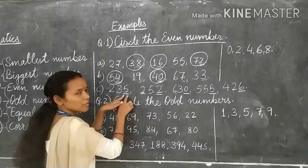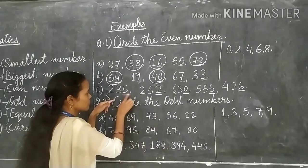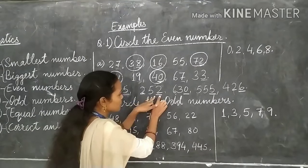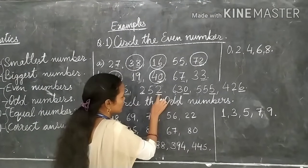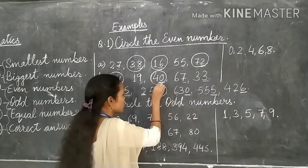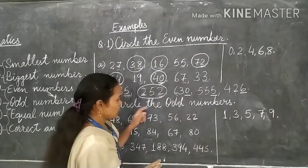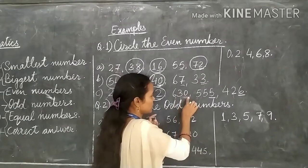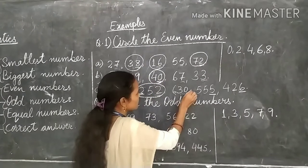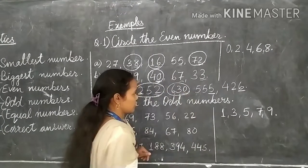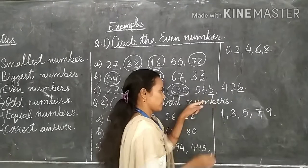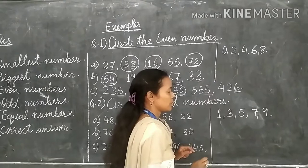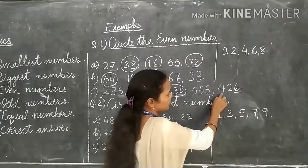5 is an odd number, so 235 is not an even number, we will not circle it. 252 — 2 is an even number, so 252 is an even number, we will circle this. 630 — 0 is an even number, so we will circle 630. 555 — 5 is an odd number, so we will not circle this. 426 — 6 is an even number, so we will circle 426.